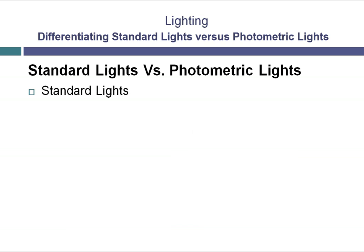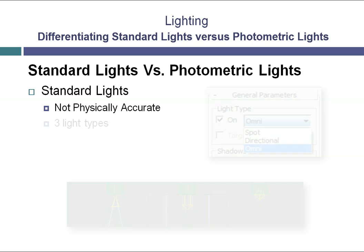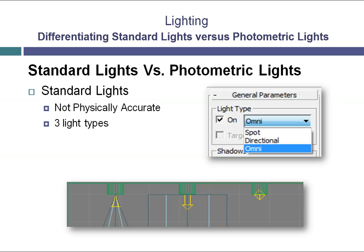Standard lights have been available in 3ds Max from its inception. These lights are not physically accurate, which means that the light emitted does not pay attention to real-world light properties. We will discuss lighting fall-off later in this chapter. Standard lights provide three different types of fixture styles. The spotlight is a cone of light that works like a real-world adjustable pin spot. You can control the cone angle and the cone fall-off, giving you the flexibility to create sharp or soft spots for scene lighting.